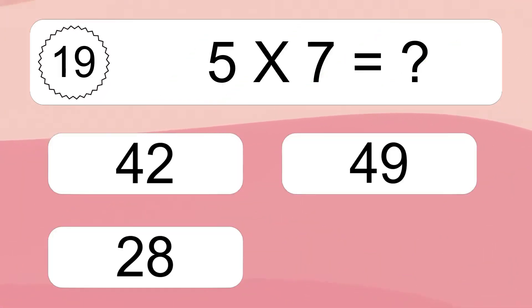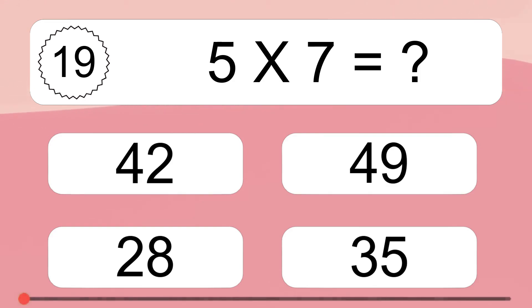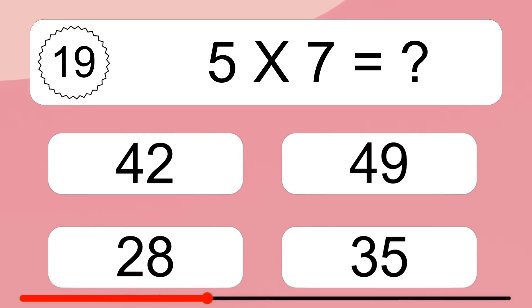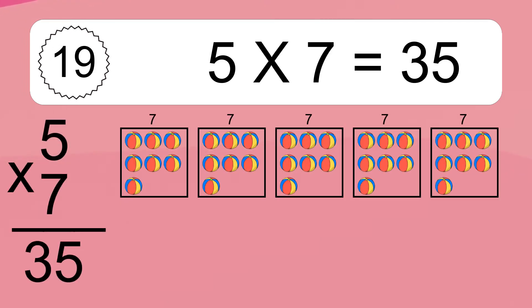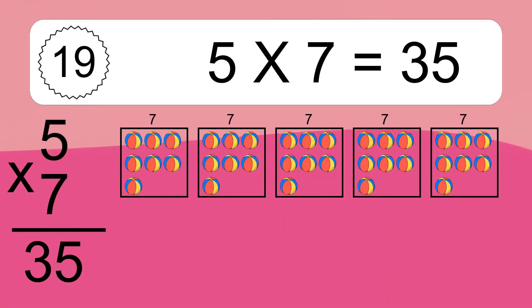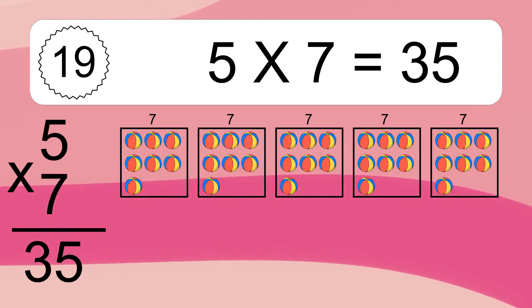Five times seven equals what? Five times seven equals 35. We have five boxes, and each box has seven colorful balls inside. If you count all the balls in all the boxes together, you will have five times seven balls. This equals 35 balls.